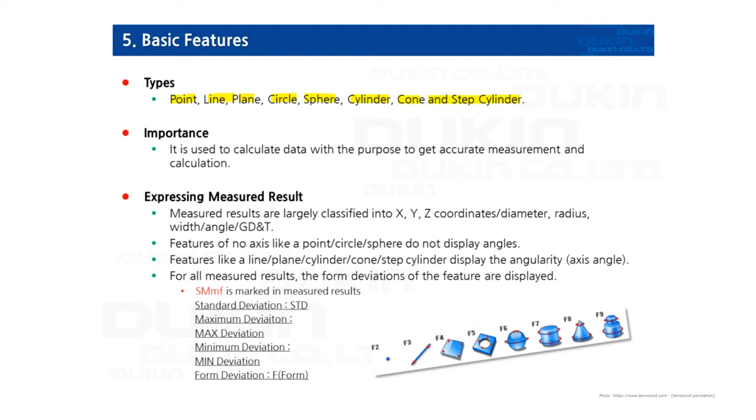Each feature has different output items. For example, a point outputs X, Y, and Z coordinates, and a line outputs X, Y, and Z coordinates, and A1, A2 items. The meaning of A1 and A2 is the axis of the feature.